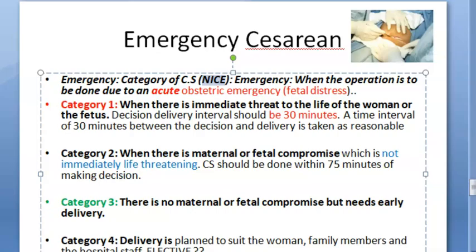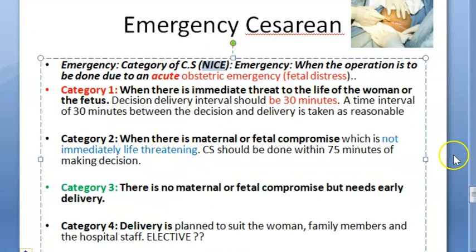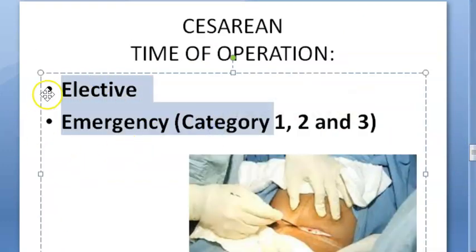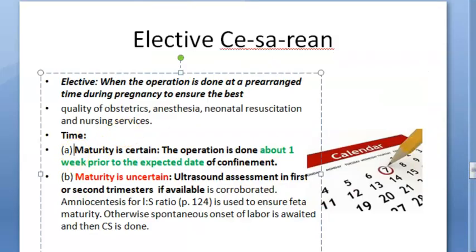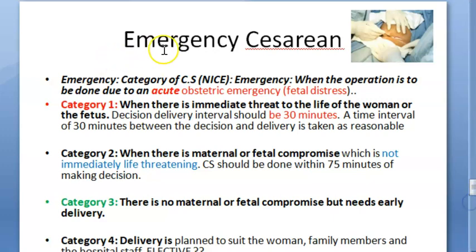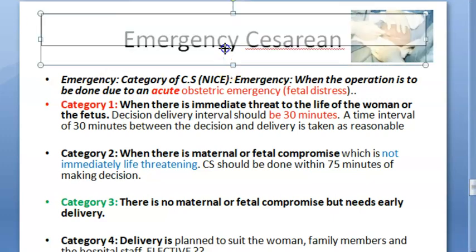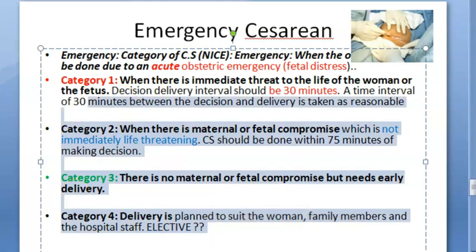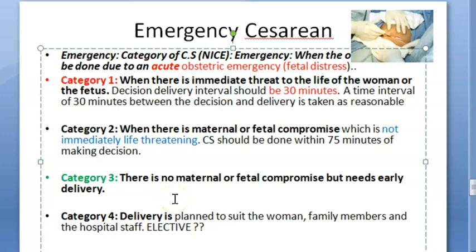In summary, for elective caesarean, you ensure fetal maturity. If maturity is uncertain, you wait for the onset of labour. If needed and time allows, steroids can be given to mature the baby's lungs. So if they can wait, they would give steroids to ensure fetal lung maturity before proceeding.